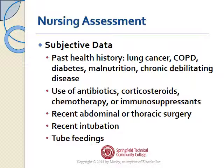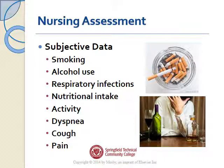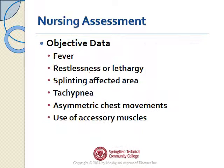For your assessment, you're going to assess their health history: do they have debilitating diseases like lung cancer or COPD, diabetes, or malnutrition? Do they use antibiotics, corticosteroids, chemotherapy, or immunosuppressants? Have they recently had abdominal or thoracic surgery, been intubated, or are they receiving tube feedings? Do they smoke or use alcohol? Have they had respiratory infections in the past? What is their typical nutritional intake, activity level, and independence in activities of daily living? Do they have difficulty breathing, are they bringing anything up with a cough, and is it painful to breathe or cough?